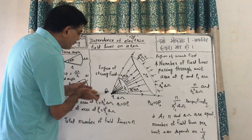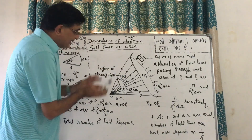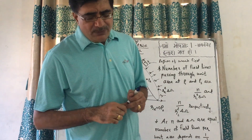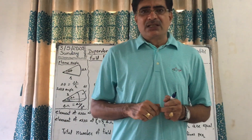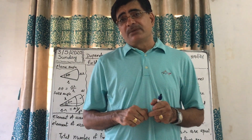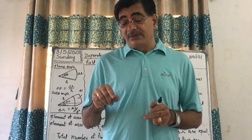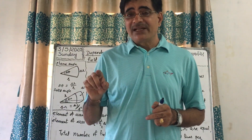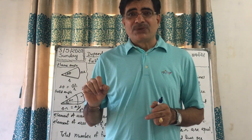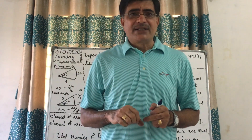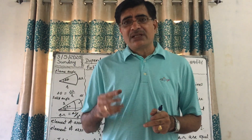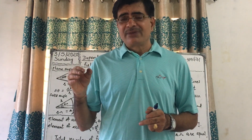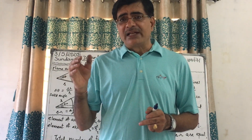Earlier, Faraday gave the name 'lines of force,' but it was confusing because both electric and magnetic fields have lines. So the terminology was corrected and now we use 'electric field lines' and 'magnetic field lines' instead of lines of force.